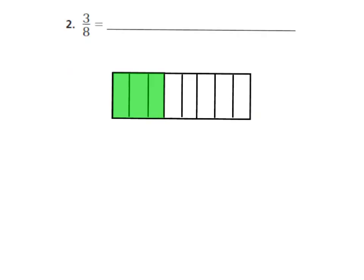Let's look at number two. I have three-eighths for my fraction, and then I have my model for three-eighths also. I know that this is three-eighths because I have my fraction bar — it's broken up into eight equal pieces and three of them are shaded. So I want to break this up into a sum of unit fractions, making it into an addition problem showing the answer will be three-eighths. I can break up each of my pieces and call it one-eighth, so three-eighths equals one-eighth plus one-eighth plus another one-eighth. Since they wanted the sum of unit fractions, they wanted us to break it up using one unit at a time.